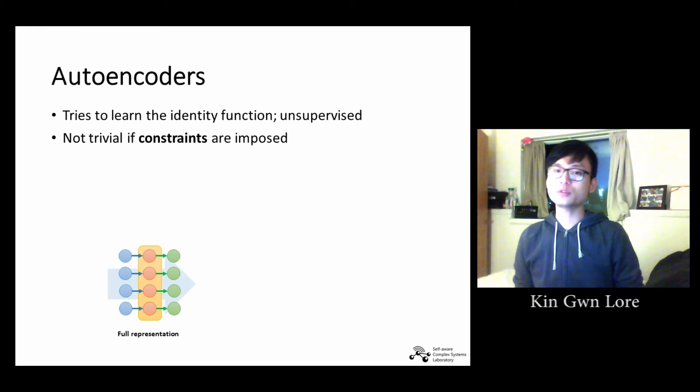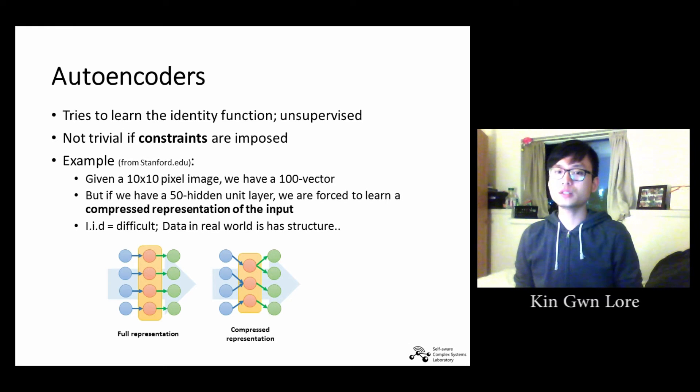As a concrete example, suppose we have a 10x10 pixel image as the input, meaning that we have 100 input units, but we only have 50 hidden units. Therefore, we are forcing the network to learn a compressed representation of the input given only the vector of hidden unit activations, in order to reconstruct the 100 unit output.